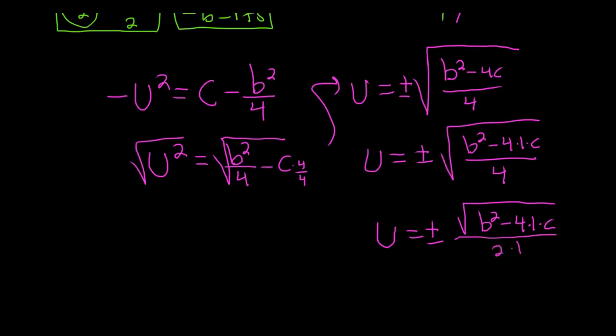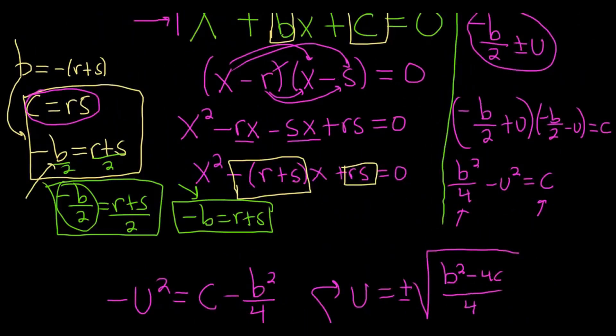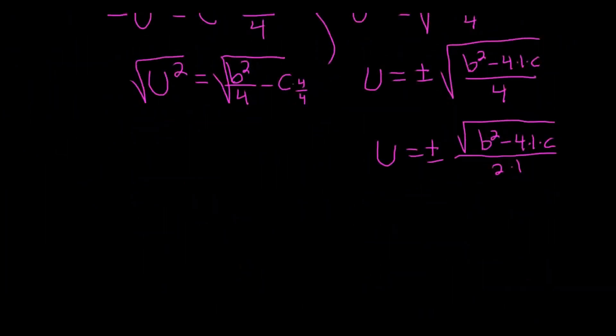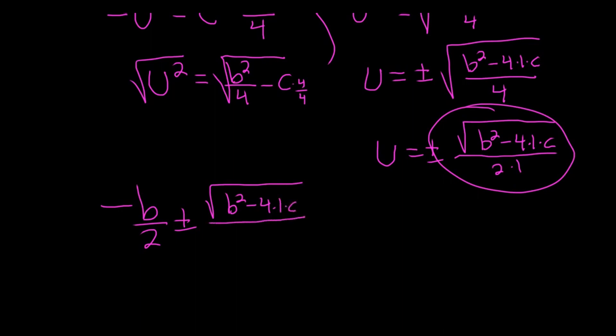So that's not the answer. That's just part of the quadratic equation. If you remember, the method says, let me go back up so you can see it, the answers are of this form here: -b/2 plus or minus u. So now we just have to go back and add -b/2. So we have -b/2 plus or minus all of this stuff: square root (b² - 4·1·c) all over 2·1.